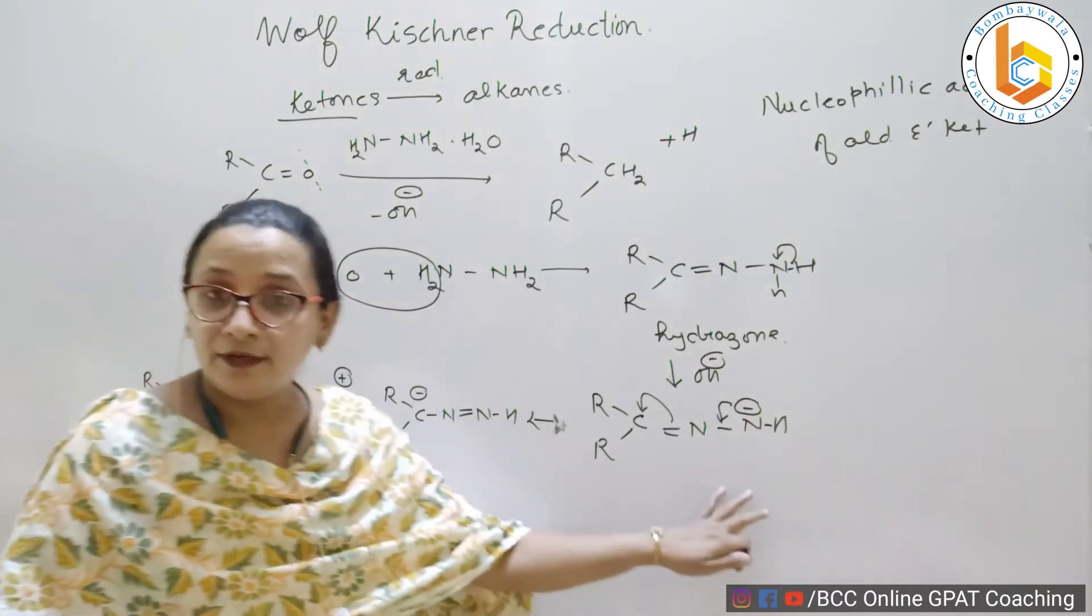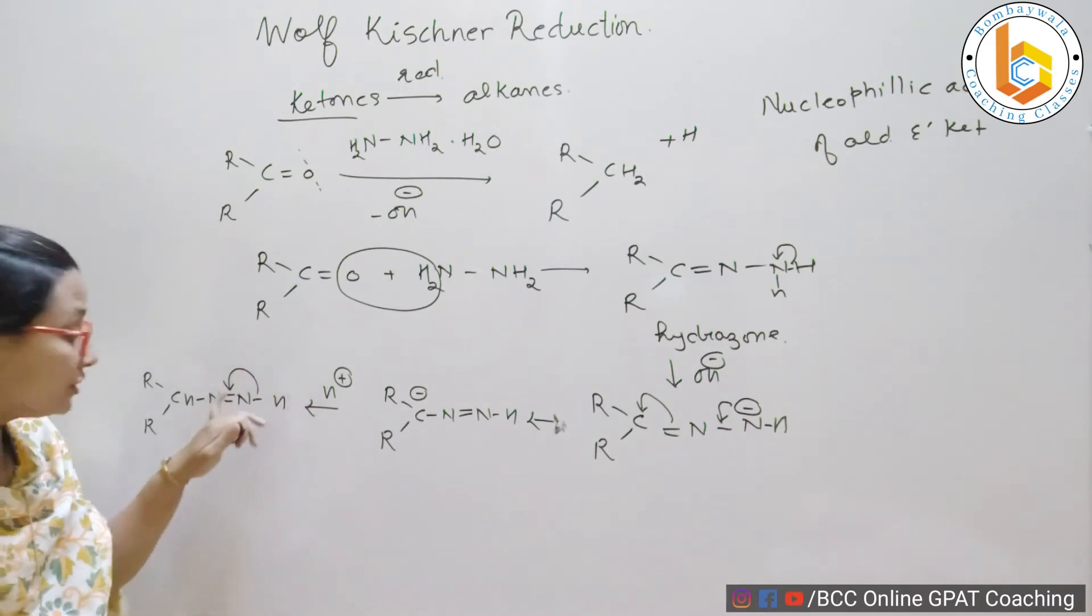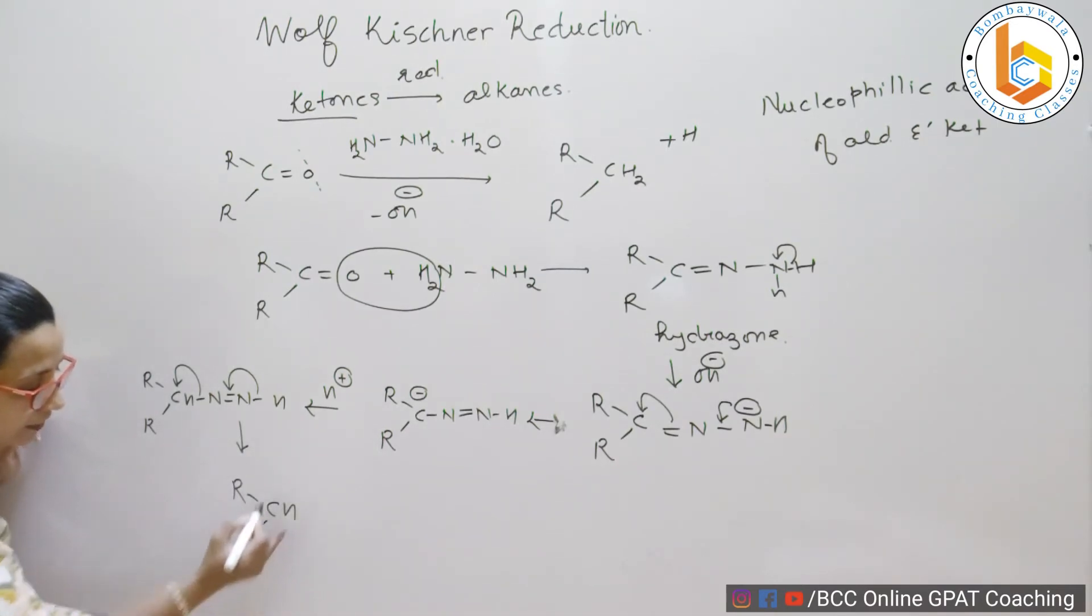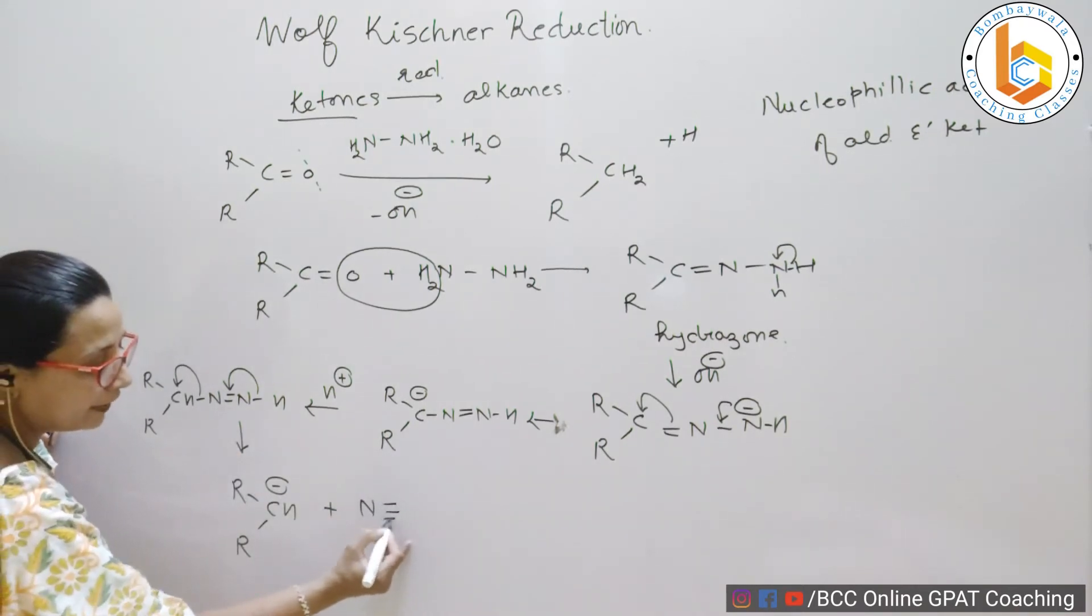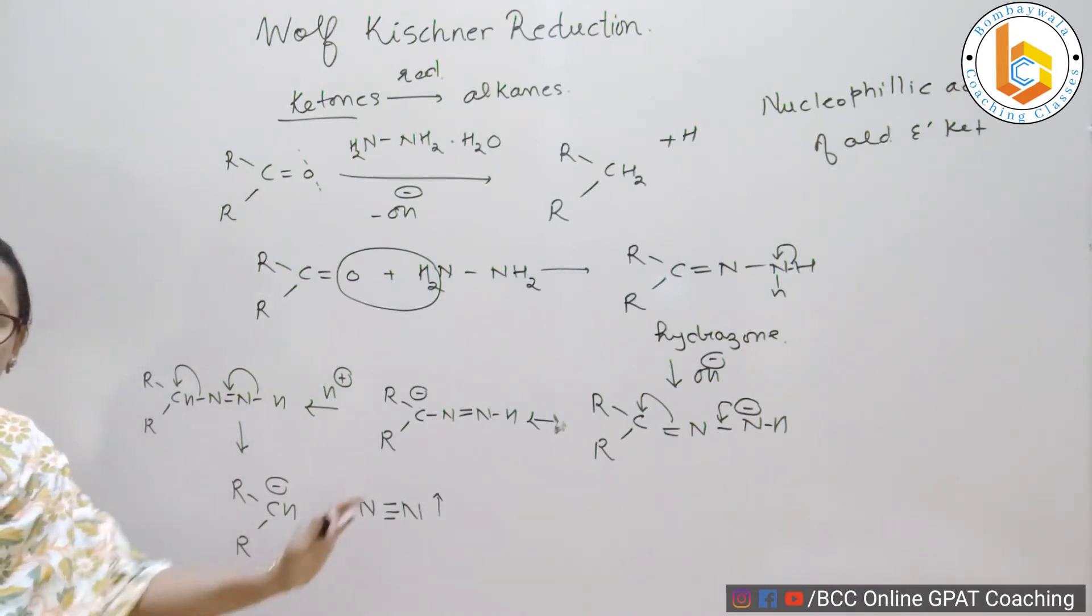The same step, what happened here, will again repeat. Now, see how? Again, the negative charge moves to give you a double bond. Again a negative charge moves to give you a double bond. And this single bond breaks to give you a negative charge. Now, see what do I get? RCHR with a negative charge. And what is separated is N triple bond N, that means nitrogen gas is liberated. Nitrogen gas is liberated.